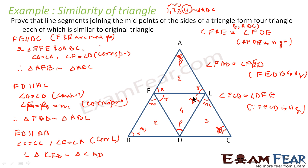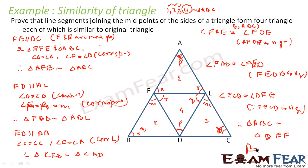Now we have proved that angle P equals angle P, angle Q equals angle Q, and angle R equals angle R — all three angles are equal. Therefore, triangle ABC is similar to triangle DEF. The logic we used is: since F and E are midpoints, FE is parallel to BC. We found many parallel lines: FE is parallel to BC, FD is parallel to AC, and ED is parallel to AB.